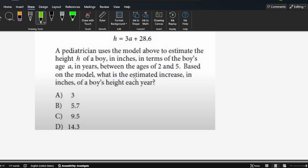So that means, what's the estimated increase? Find the formula here, is 3. Why? So it's 3 each year. For example, because h is between 2 to 5, we substitute 2.